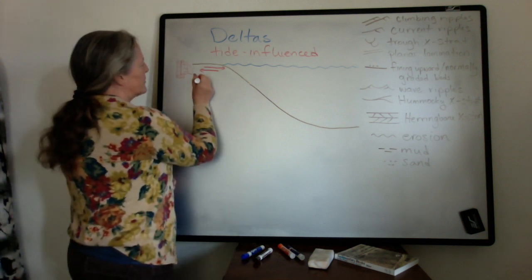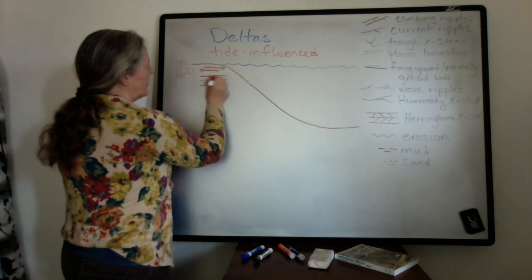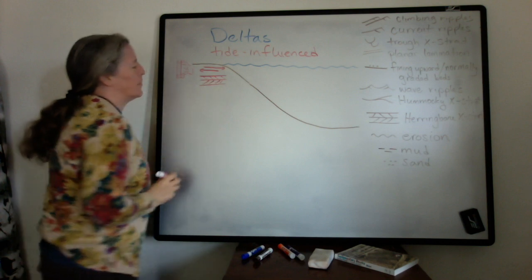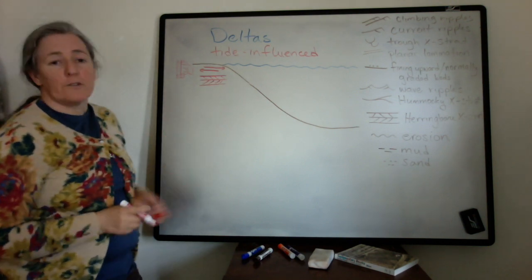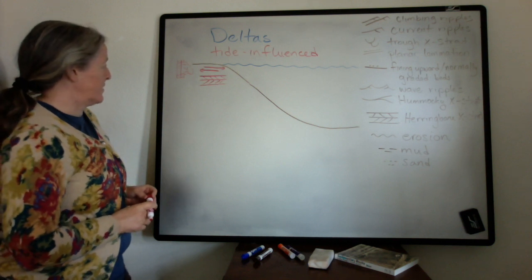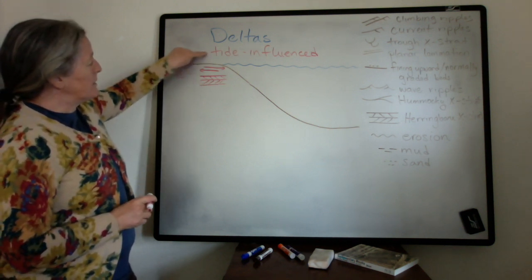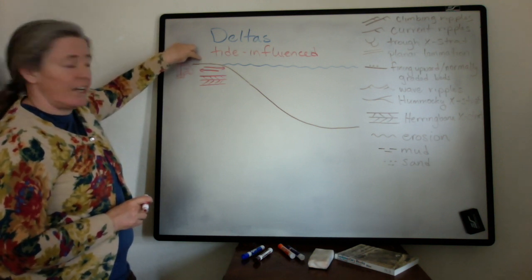For example, herringbone cross stratification is one of those, where you have deposition in one direction during the tide coming in and going the other way as the tide goes out. Mud drapes, reactivation surfaces are also common. A lot of times these, on the delta top, these tidal currents are within channels, so they can end up looking quite a bit like the meandering river facies.